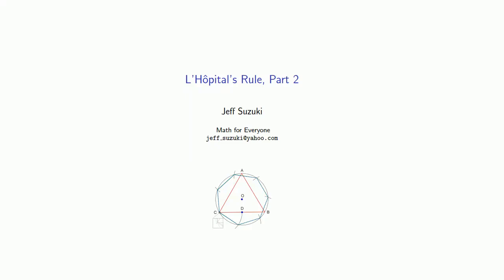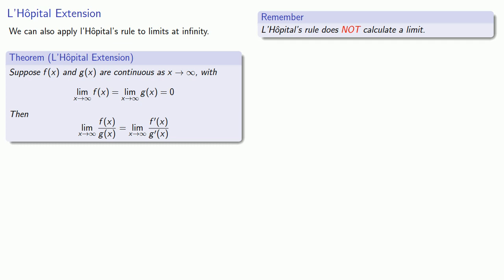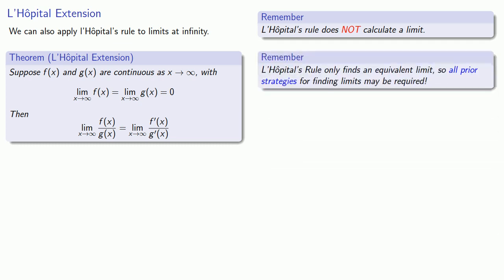We can extend L'Hôpital's rule in a number of ways. One way is we can apply L'Hôpital's rule to limits at infinity. We have f(x) and g(x) continuous as x goes to infinity, with the limits of both equal to 0, then the limit of the quotient is the limit of the quotient of the derivatives. L'Hôpital's rule does not calculate a limit, which means all prior strategies for finding limits may be required.